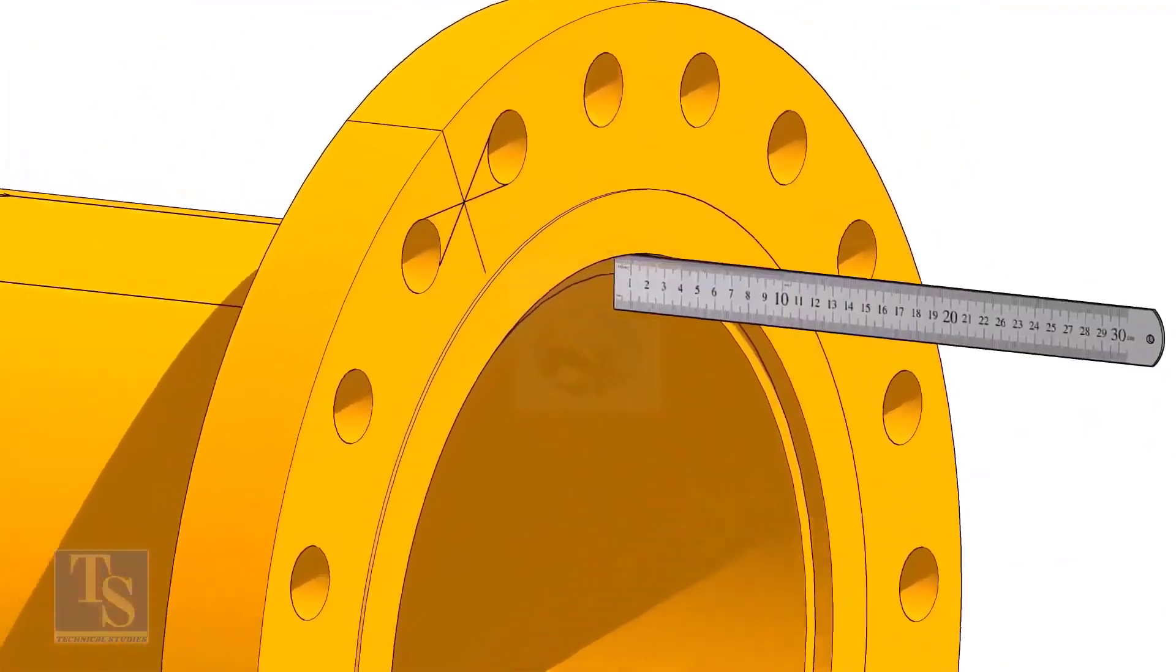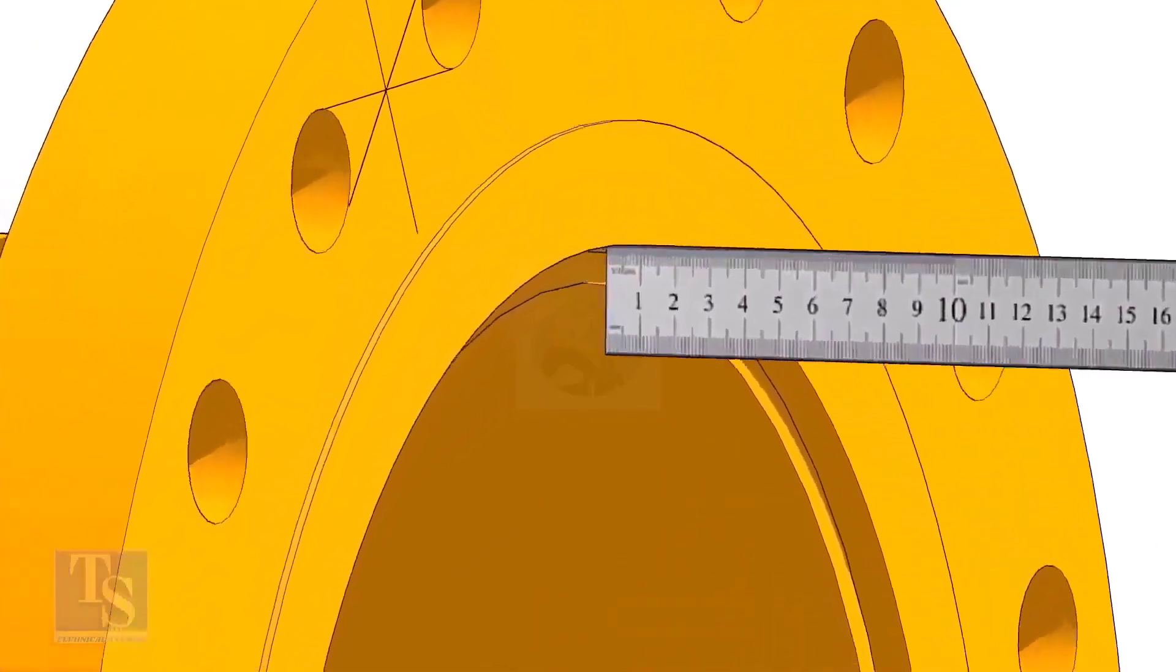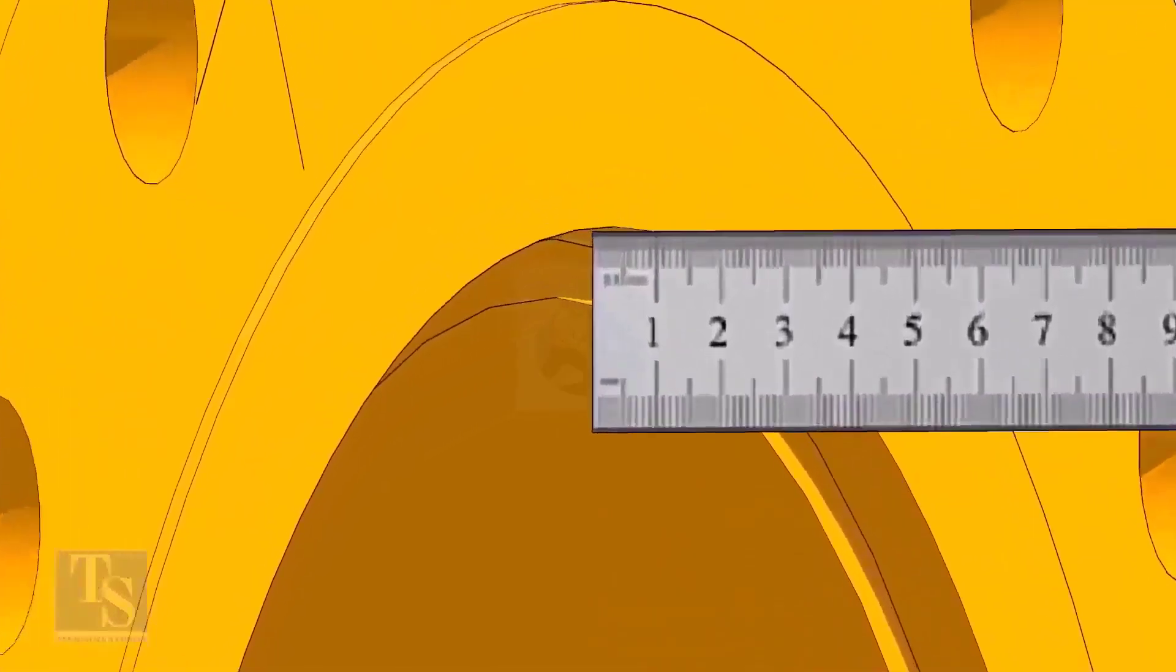Fix the distance between the flange face and the pipe face. Usually, this measurement is equal to the thickness of the pipe.